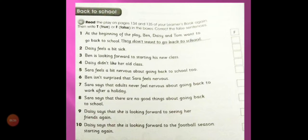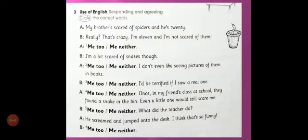During their conversation, they used two expressions: 'Me too' and 'Me neither.' After reading the whole play and conversation on pages 134 and 135, you have to circle the correct answers. For example: 'My brother is scared of spiders and he is too.' — 'Really? That's crazy. I am not scared of them.' After reading the conversation of these three friends and how they replied, circle the correct answers.